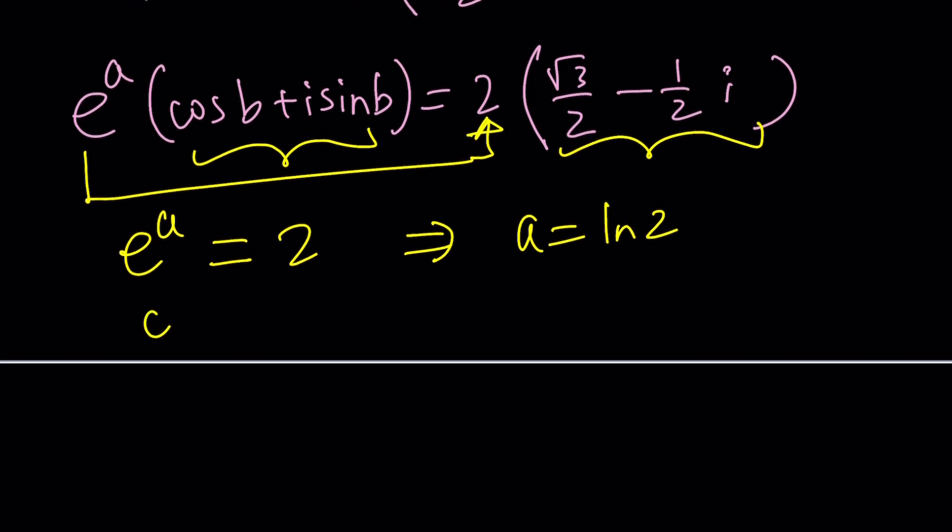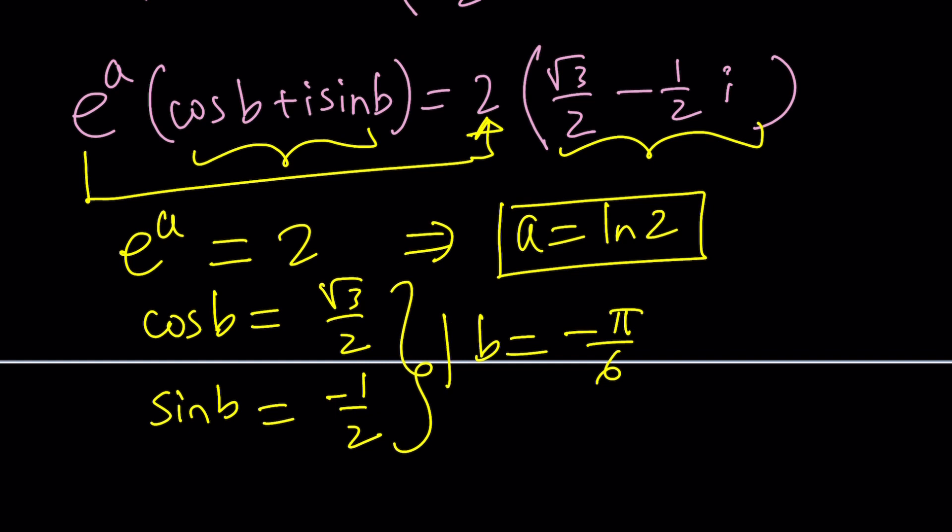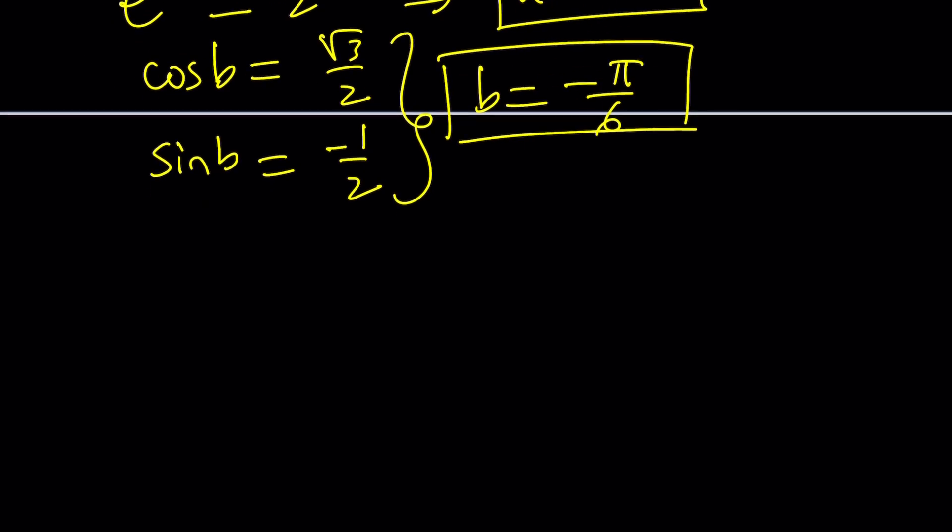And then from the second equation, cosine B. Actually, the second equation gives us two equations. So that gives us the fourth quadrant. In the first quadrant, cosine 30 is root three over two. So from here B is negative pi over six because we're on the fourth. So we got the values of A and B. So we should be able to write Z. What is Z? A plus bi, ln two minus i times pi over six.